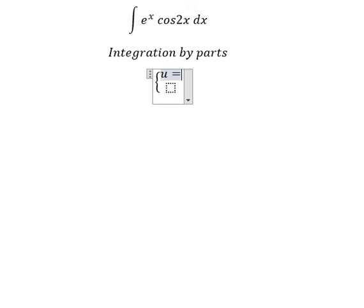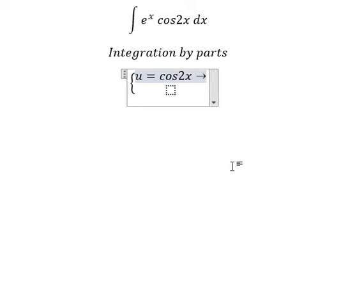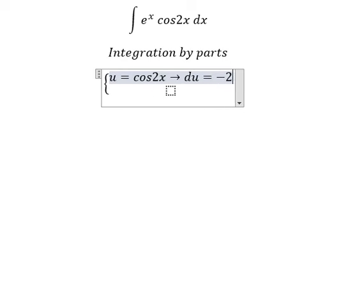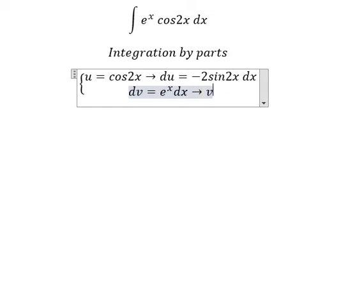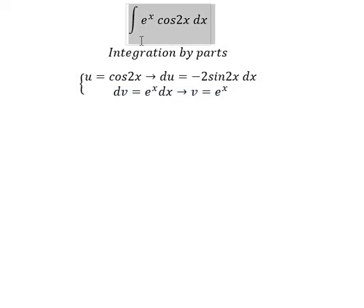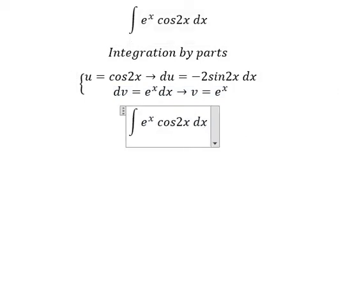We set u equal to cos(2s), so we find the first derivative: du equals negative 2 sin(2s) ds. For dv, we have e to the power of s ds, so we integrate to get v equals e to the power of s.